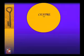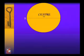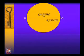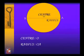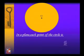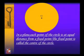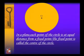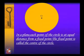Let us see: this circle has center O, and we take points B and A on the circle. In a plane, each point of this circle is at equal distance from a fixed point. The fixed point is called the center of this circle. Here, center is equal to O.